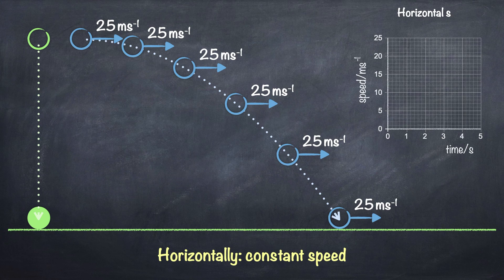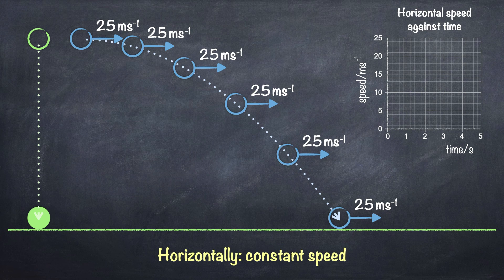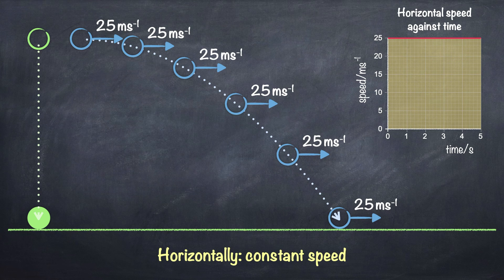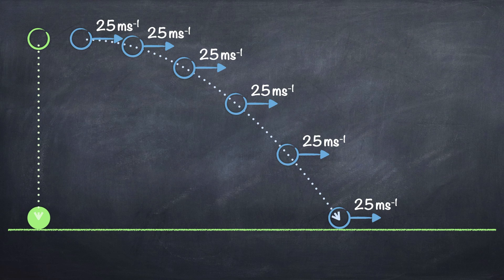If we drew a graph of a projectile's horizontal speed against time, it would look like this — a horizontal line with a constant value of 25 m/s. When you're answering projectile questions, the projectile's horizontal speed will no doubt be different. Since the area under a speed-time graph gives us distance, the area under this graph of horizontal speed against time must give us the horizontal distance travelled by the projectile, also known as the range. But what about the projectile's vertical speed? How does that change with time?